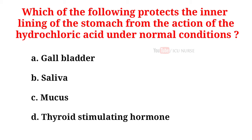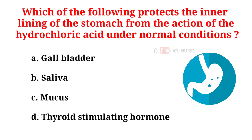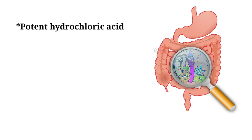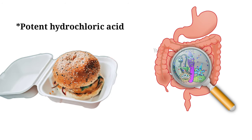Which of the following protects the inner lining of the stomach from the action of hydrochloric acid under normal conditions? A. Gallbladder. B. Saliva. C. Mucus. D. Thyroid stimulating hormone. And the correct answer is C. Mucus. The potent hydrochloric acid kills bacteria, protecting your body from harmful microbes. Your stomach protects itself from being digested by its own enzymes or burnt by corrosive hydrochloric acid by secreting sticky neutralizing mucus that clings to the stomach walls.